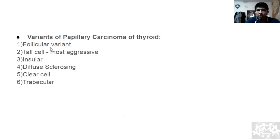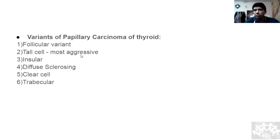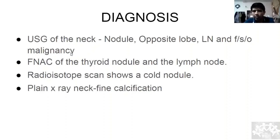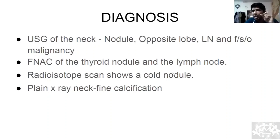Variants of papillary carcinoma (theoretical): follicular variant, tall cell variant, insular variant, diffuse sclerosing, clear cell, trabecular. These are for pathology purposes and don't change management — except tall cell, which is a more aggressive pattern. Diagnosis: ultrasound of the neck to assess the nodule, look at the opposite lobe, assess lymph nodes, look for features of malignancy like calcification, nodularity, hypoechogenicity. Then FNAC and radioisotope scan — the nodule won't take up iodine (cold nodule) because it's not functional.